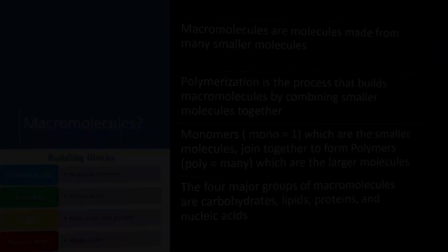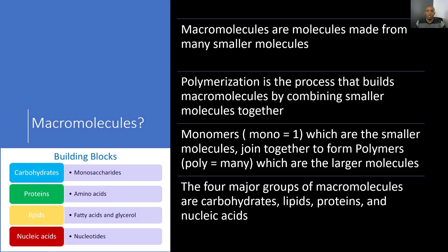So first things first, what are macromolecules? Macromolecules are simply molecules made from many smaller molecules, and the word macro literally means large. Polymerization is the process that builds macromolecules by combining smaller molecules together. Monomers — where mono literally means one — are the smaller molecules that join together to form polymers, where poly means many, which are the larger molecules.